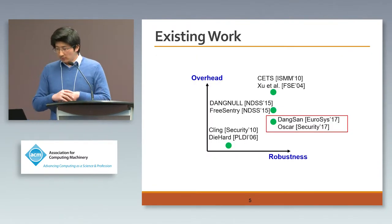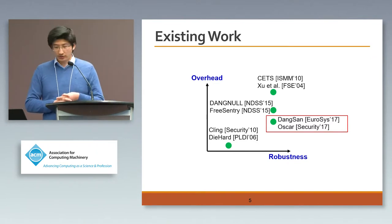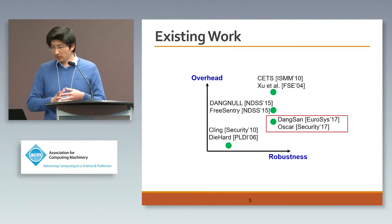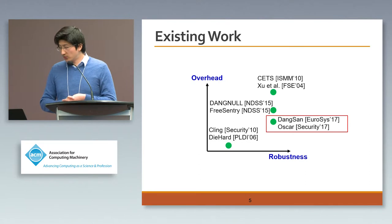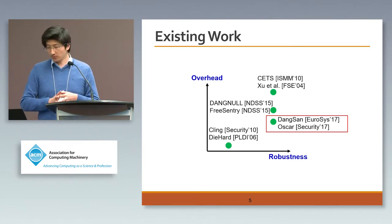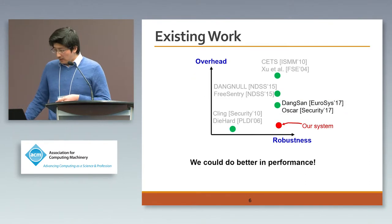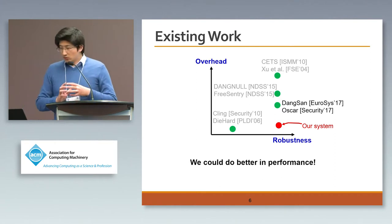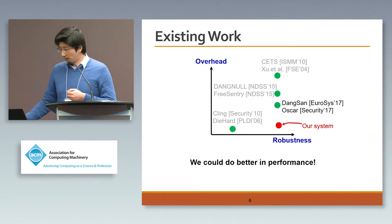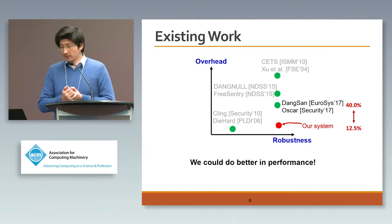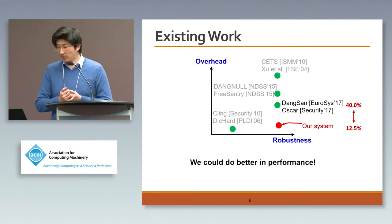Before going to details, there are existing works which we categorize using two metrics: robustness — whether it is able to defeat use-after-free exploits — and runtime overhead. We can see that DangSan and OSCAR achieve good results with low overhead and high robustness. That is our goal: to achieve much better performance at the same level of effectiveness. Our result shows we achieve 12.5% runtime overhead compared to 40% overhead achieved by DangSan and OSCAR.